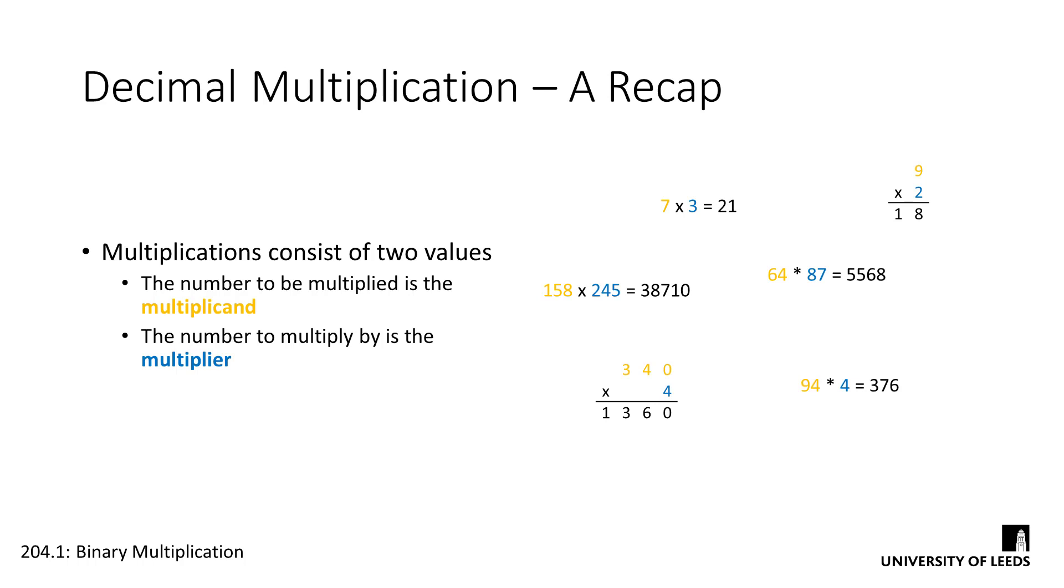There are many different ways to notate multiplication, but the process itself remains the same. Multiplication is defined as the addition of a number to itself, as often as is indicated by another number. This process consists of two values. The number to be multiplied is the multiplicand, and the number to multiply by is the multiplier.